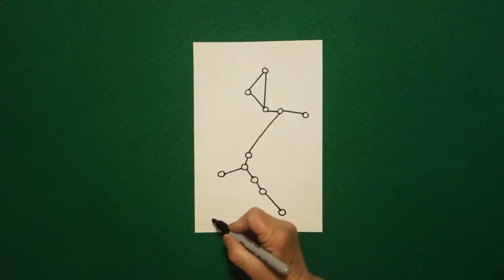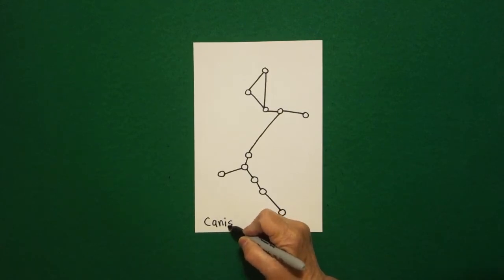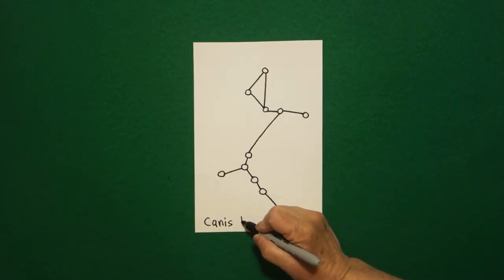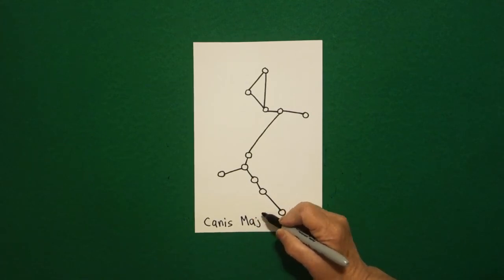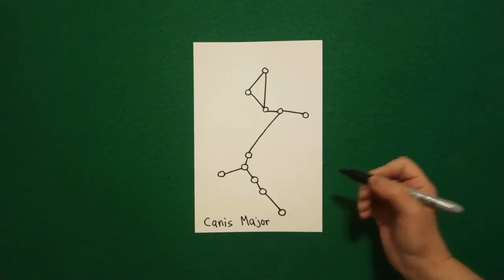At the bottom I write C-A-N-I-S Canis Major, which I'm sure I'm saying incorrectly, but it's really interesting. This is the greater dog that follows Orion, which is another constellation I drew.